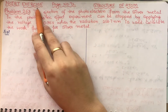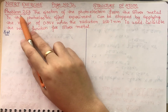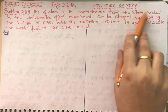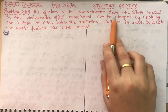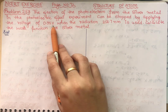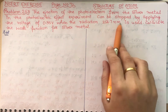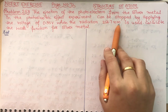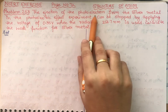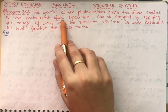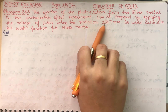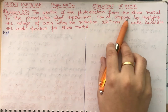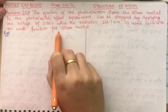Hello students. This is NCERT exercise on page number 72, problem number 2.53. We are talking about the ejection of the photoelectron from the silver metal in the photoelectric effect experiment, which can be stopped by applying a voltage of 0.35 volt when radiation of 256.7 nanometer is used. We need to calculate the work function for silver metal.